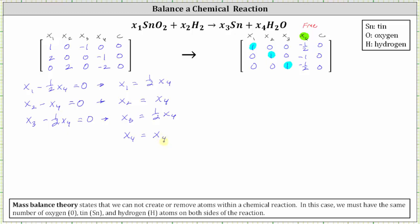These four equations must be true in order for the chemical reaction to be balanced. Because we have the free variable x sub four, we often parameterize these equations in terms of t by letting x sub four equal t. So x sub four equals t, x sub one equals one half t, x sub two equals t, and x sub three equals one half t. It's common to express the solution in this form using the free variable x sub four, as well as parameterizing the equations in terms of t.